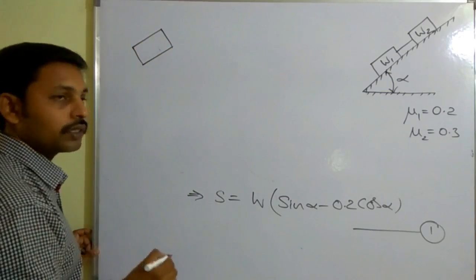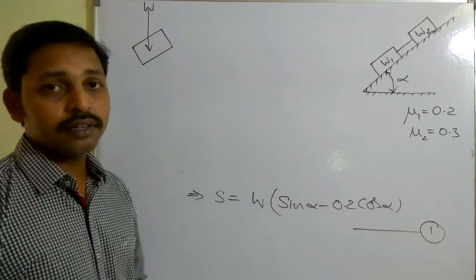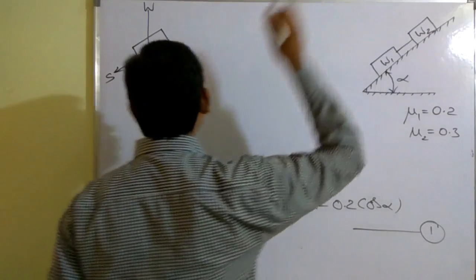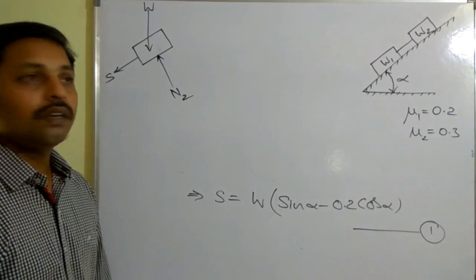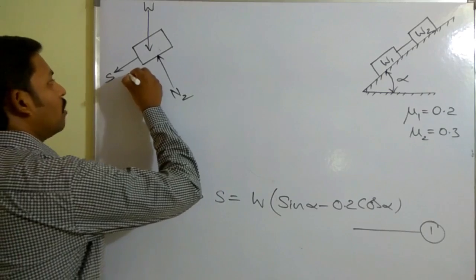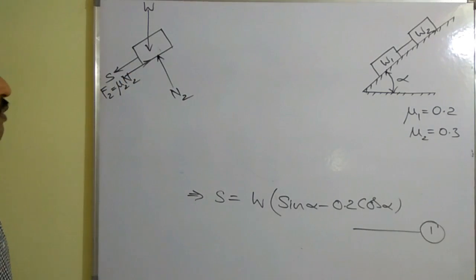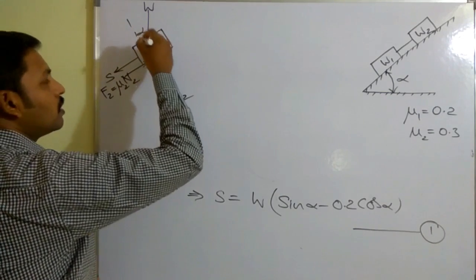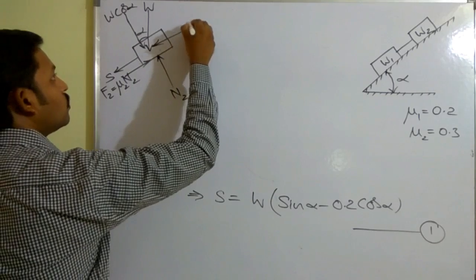Remove all the contact surfaces, draw the block separately, and represent the weight W — since W1 equals W2, I use the common letter W. Along the string there will be a tensile force S. Perpendicular to the surface in the opposite direction there is the normal reaction N2. Since block W1 moves down the plane, W2 also has a tendency to move downward, so in the opposite direction we represent frictional force f2 equals mu2 times N2. The weight W makes an angle alpha with the vertical, so resolve it into W cos alpha perpendicular to the plane and W sin alpha along the plane.